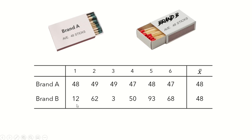You do the same for the second brand and were surprised by the results. You got 12 sticks in one box, 62 in the second, 3 in the third, 50 in the fourth, 93 in the fifth, and 68 in the sixth — how absurd. All of them were far from the claim of 48 matchsticks per box, but when you calculated the mean, surprisingly, exactly as claimed, the boxes contain 48 matchsticks per box on average. Both brands are true to their claims.